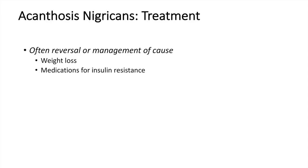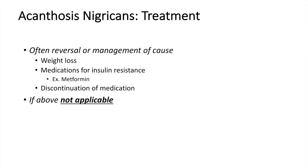Other treatments include medications for insulin resistance such as metformin, which have been shown to reduce acanthosis nigricans in some cases. Discontinuation of medications causing acanthosis nigricans — such as aripiprazole — is also an option. If none of the above are applicable or the case is very difficult to reverse, there are other options: topical retinoids and topical vitamin D analogs, which have been shown to reduce the hyperpigmentation and some of the plaque formation involved in acanthosis nigricans.